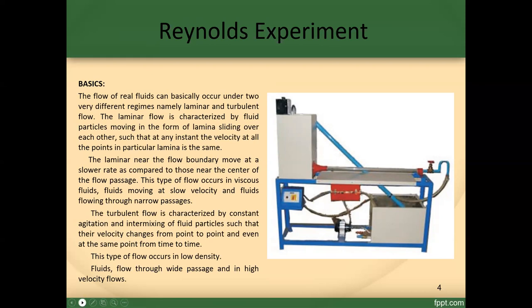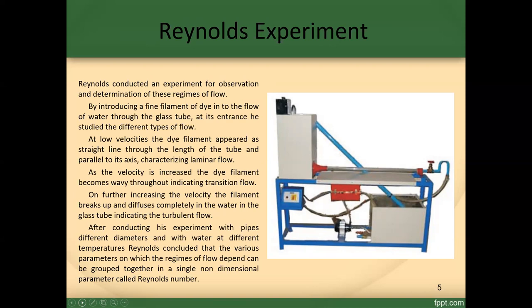Such as gases and air. Reynolds conducted an experiment for observation and determination of the discrete regimes of flow. By introducing a fine filament of dye into the flow of water through the glass tube at its entrance, he studied different types of flow. At low velocities, the dye filament appeared as a straight line through the length of the tube parallel to its axis, characterizing laminar flow. As velocity increased, the dye filament became wavy throughout, indicating transition flow. On further increasing the velocity, the filament breaks up and diffuses completely in the water, indicating turbulent flow.